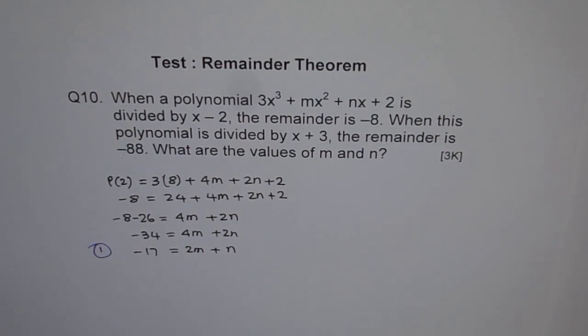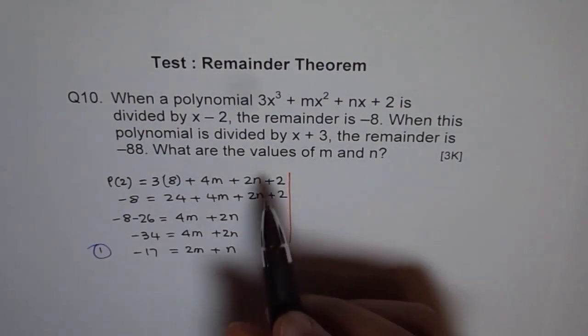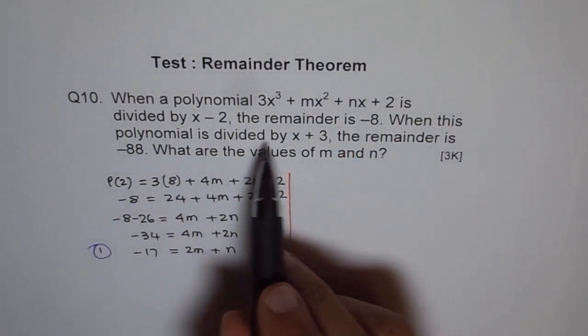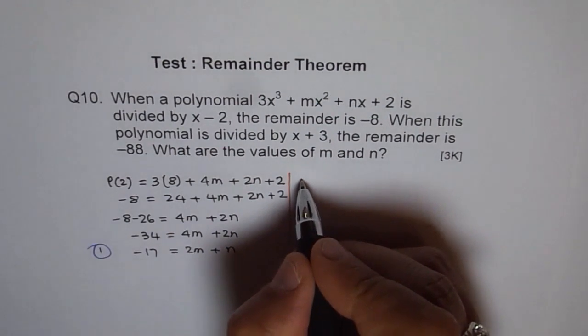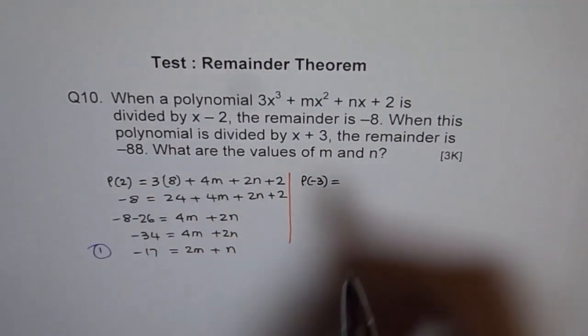Now let's try to do the other half on the right side. This polynomial is divided by x + 3. That means p(-3). So we have p(-3) equals -88.